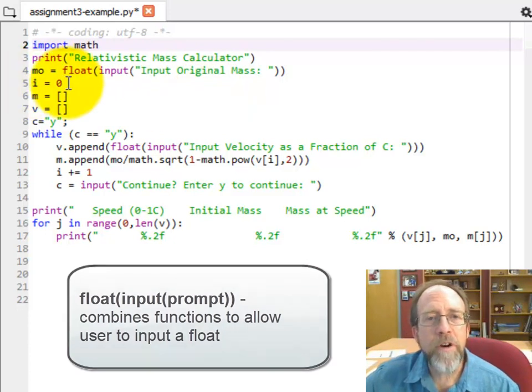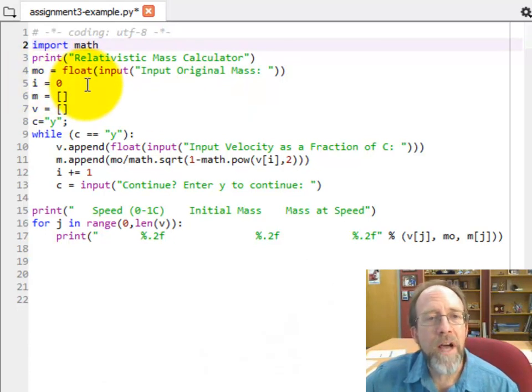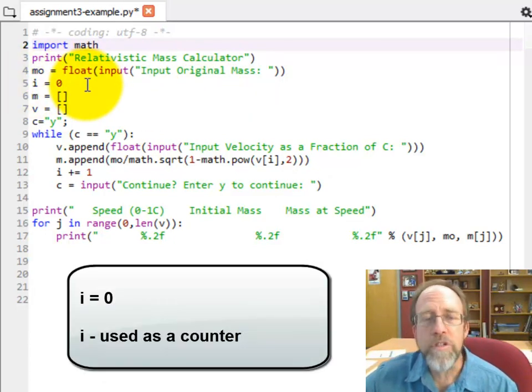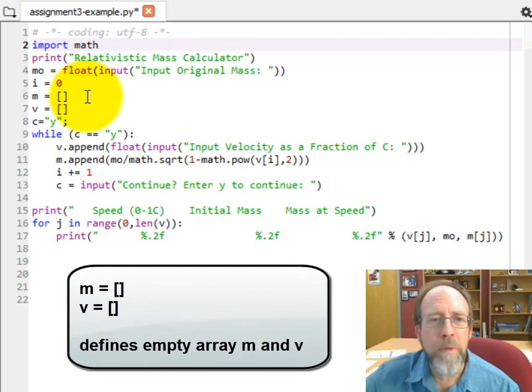Let's go ahead and go through the program itself. So the first thing I did is I created a variable i that I set to zero, and i is going to be a counter. We're going to use that counter later on. Then, here's something that's brand new. I put m equals open bracket, close bracket, and then v equals open bracket, close bracket.